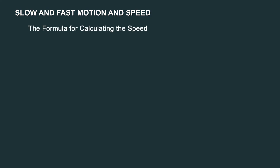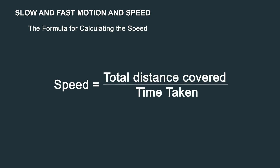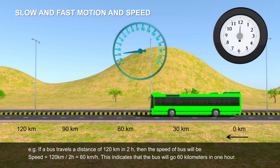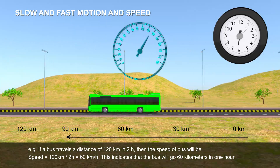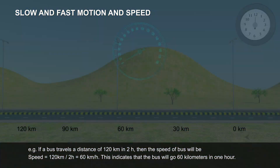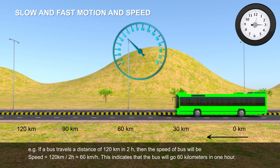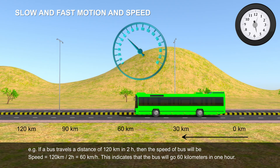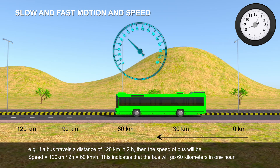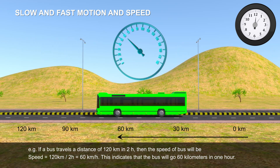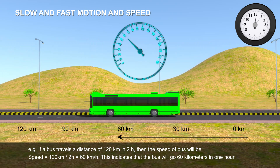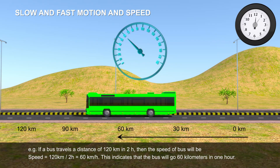The formula for calculating the speed is: speed is equal to total distance covered divided by time taken. For example, if a bus travels a distance of 120km in two hours, then the speed of the bus will be: speed = 120km divided by 2 hours, which is equal to 60km per hour. This indicates that the bus will go 60km in one hour.